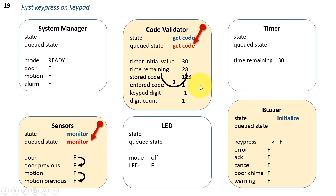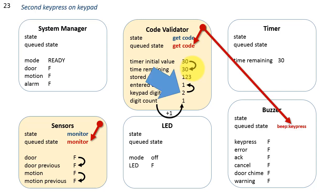We're now at 28 and counting down — you need to enter the code within a fixed time period, otherwise the code will reset. We're at 26, 25. Let's press the second key, digit 2. That updates the entered code to 1 times 10 plus 2, or 12. The digit count takes 1 and adds 1, going to 2. In this state we issue another message to the buzzer to cause the keypress sound, and we're counting down again.